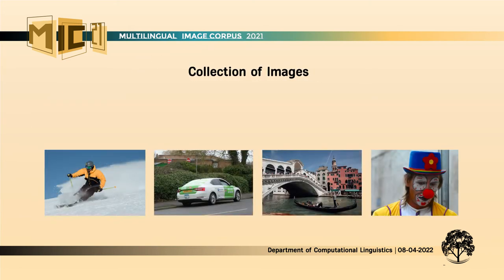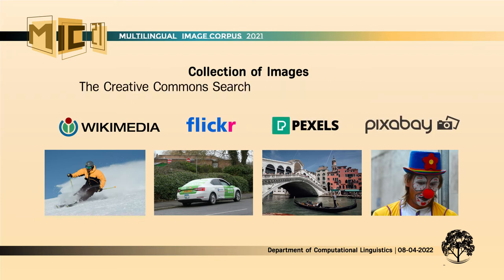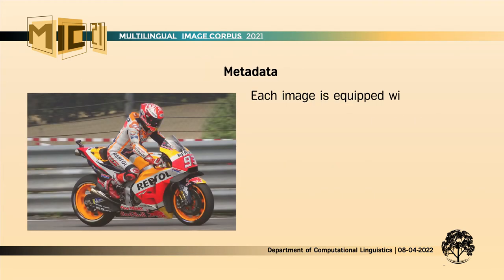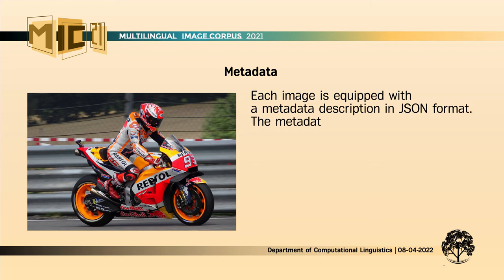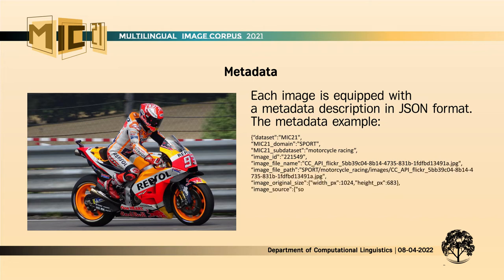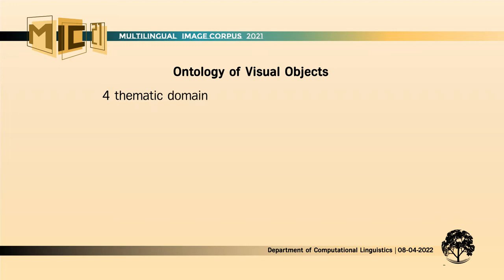The dataset is characterized by carefully selected images from thematically related domains. Images are collected from a range of repositories offering APIs: Wikimedia, Pixels, Flickr, and Pixabay. The Creative Commons search API is also used for searches on content available under Creative Commons licenses. Over 750,000 images were collected in total and automatically filtered further by image dimensions, license types, and for duplication. Each image is equipped with metadata in JSON format covering dataset domain and subdomain, image ID, file name, original size, source repository, source URL, license, and author if available.